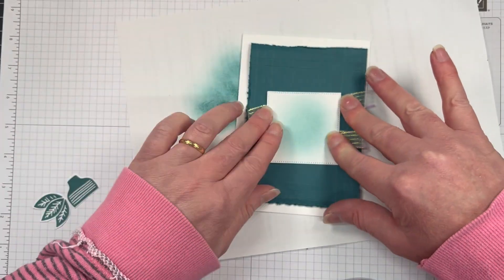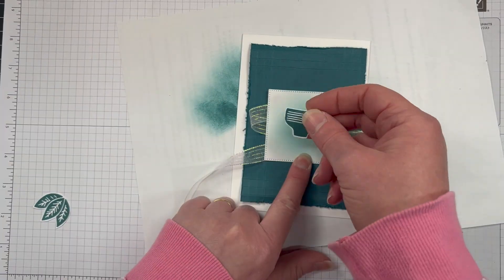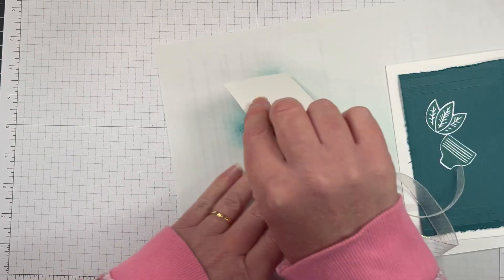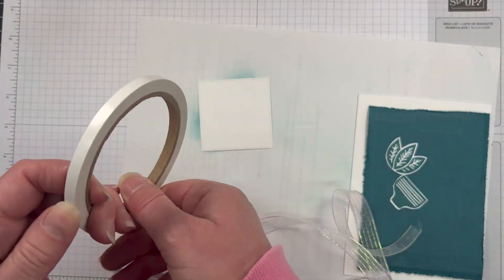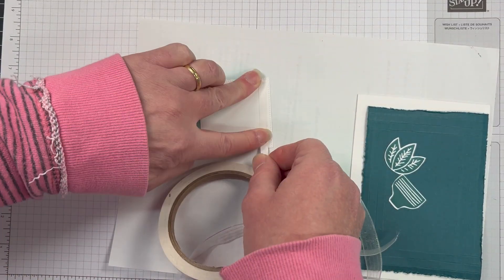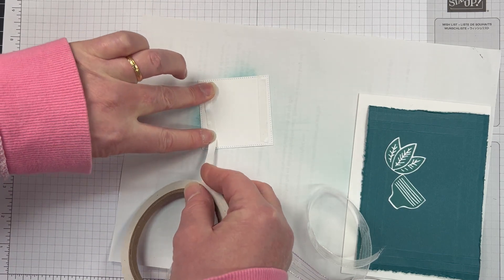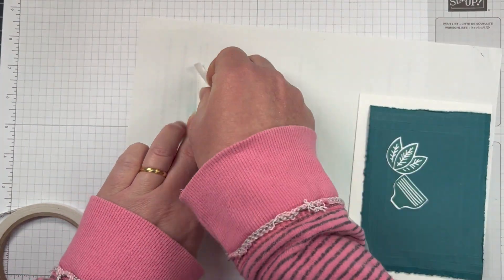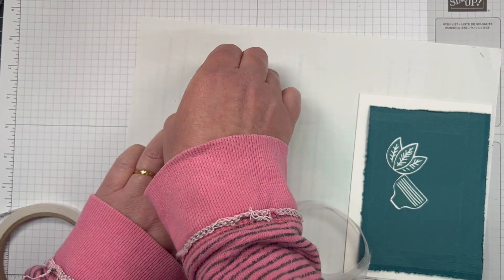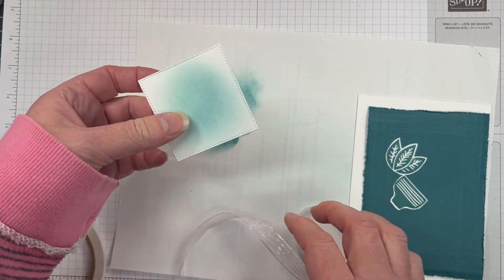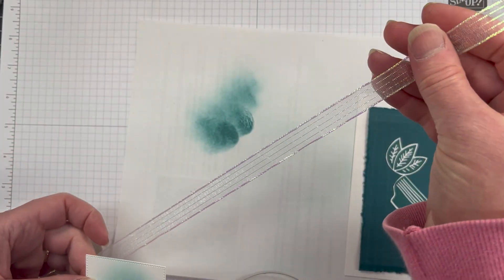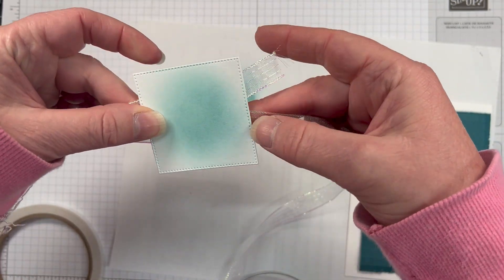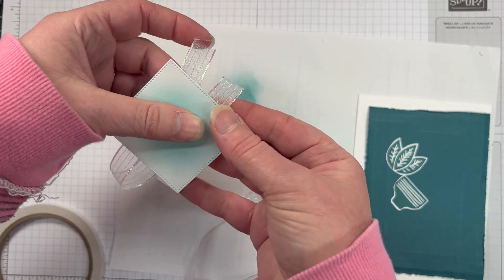So really pretty, and the light shimmers through that ribbon as well. So to secure my ribbon, I am using some tear and tape just on the edges. Tear and tape works really well at securing ribbon, and I do use tear and tape for my ribbon a lot. And I'm just going to sort of create a little bit of interest behind that die cut.